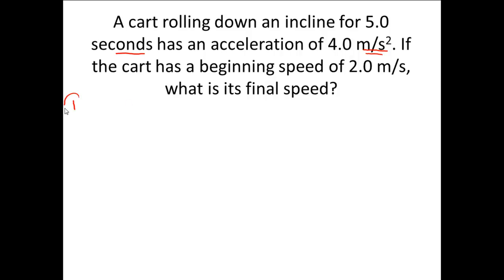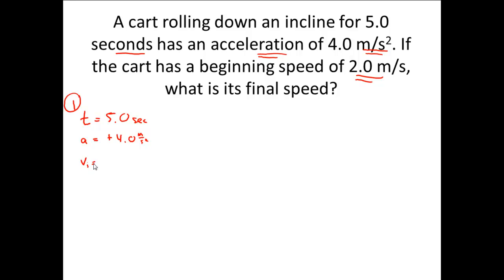The first thing we're going to do is list the givens. A cart is rolling down an incline for five seconds, so T equals 5.0 seconds. It has a positive acceleration of plus 4.0 meters per second squared. It also has an initial velocity of 2.0 meters per second. The question is asking us for the final velocity VF, which is unknown, in meters per second.